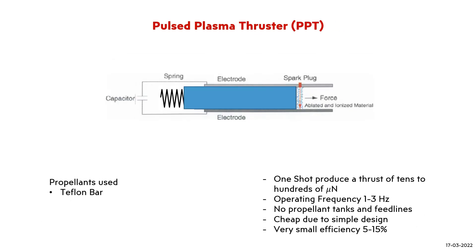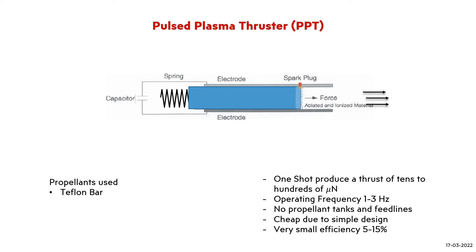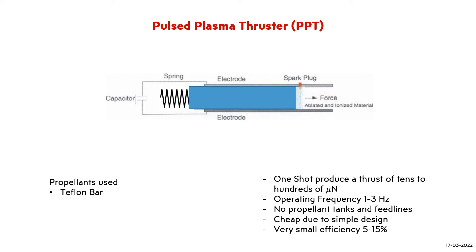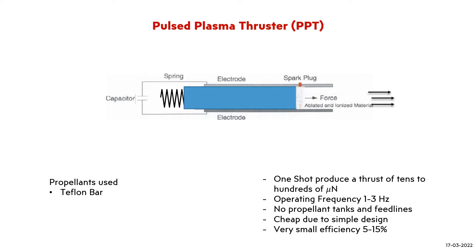Now, coming on to the Pulsed Plasma Thrusters. A Pulsed Plasma Thruster is a very simple electric propulsion thruster. A solid propellant bar, usually Teflon, fills the gap between two electrodes connected to a capacitor bank. A spark triggers an electrical discharge across the surface of the propellant. The heat transfer from the discharge ablates parts of the propellant and ionizes it. The ionized propellant is then accelerated by the electric field, similar to the MPD thruster.